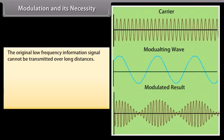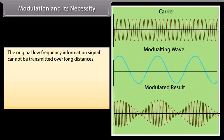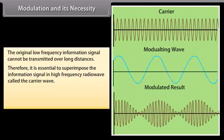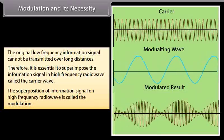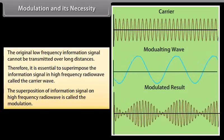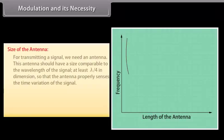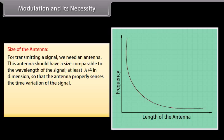Modulation and its necessity: The original low frequency information signal cannot be transmitted over long distances. Therefore, it is essential to superimpose the information signal on a high frequency radio wave called the carrier wave. This superposition is called modulation. Size of the antenna: For transmitting a signal, we need an antenna with a size comparable to the wavelength of the signal — at least λ/4 in dimension. For an EM wave of frequency 30 kHz, the wavelength λ is 10 km. It is not possible to construct and operate such a long antenna.